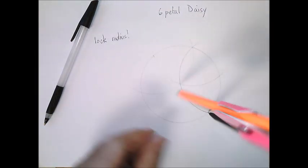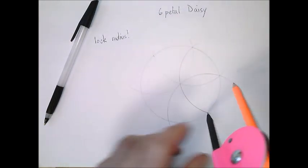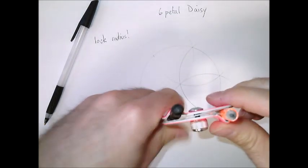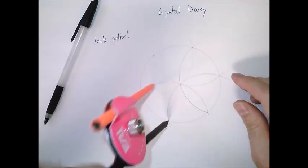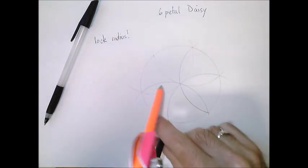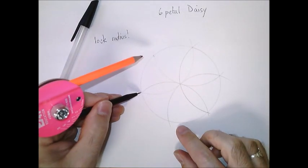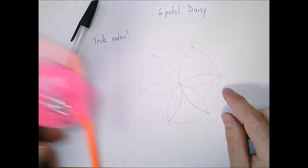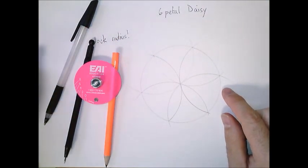Take care to put the point of your compass down accurately. If done correctly, each time you go, we'll go through the center and that should be a good six petal daisy.